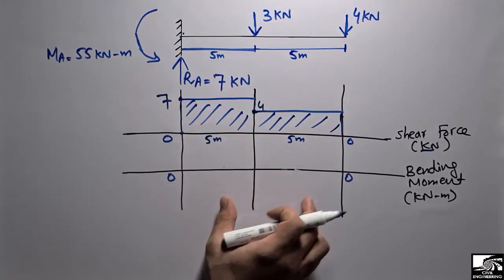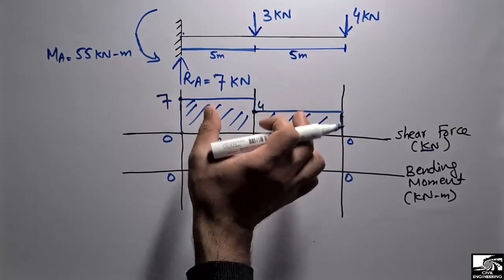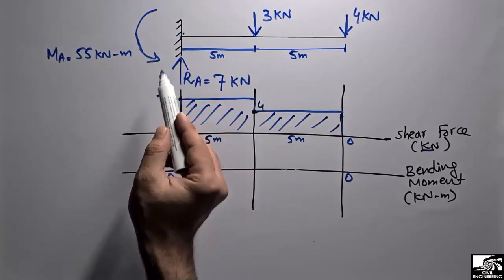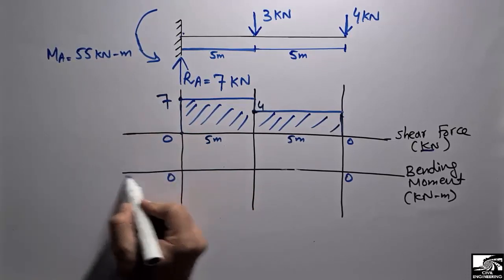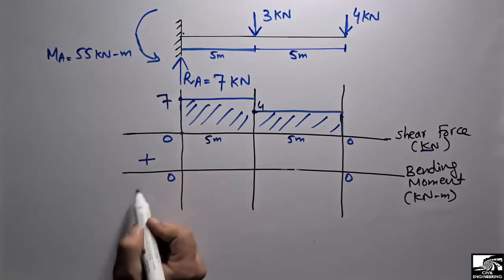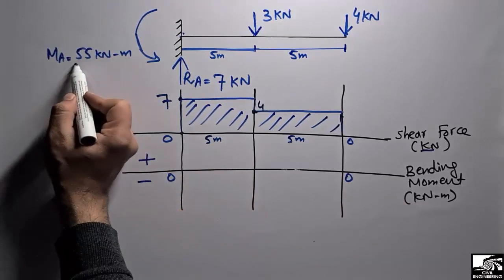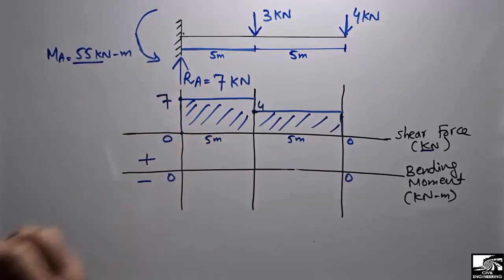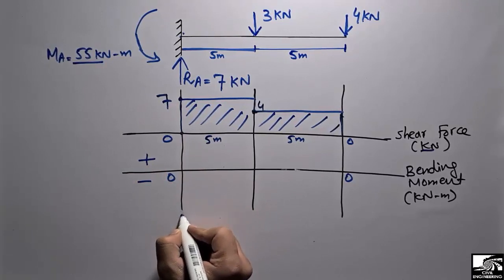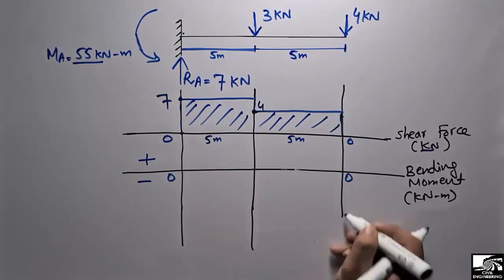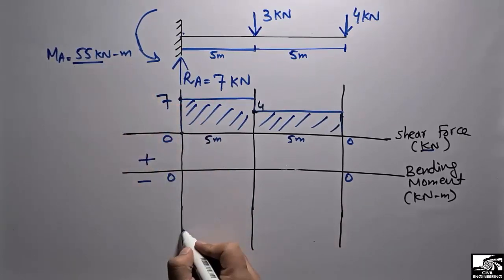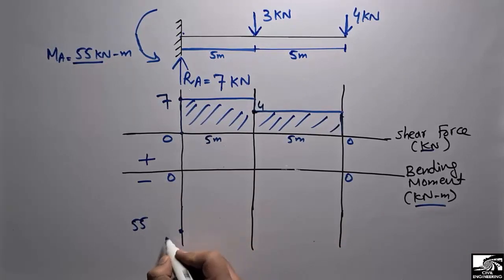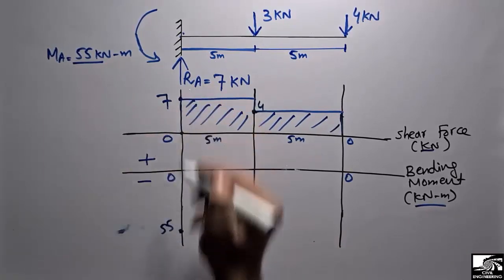Now to draw the bending moment diagram: the moment at point A is 55 kilonewton·meters. For a cantilever beam, the bending moment is always negative, so this 55 kilonewton·meters is a negative bending moment — it falls below the reference line. It should be remembered that the moment at a cantilever beam is always a negative bending moment. So we plot 55 kilonewton·meters below the reference line at point A.